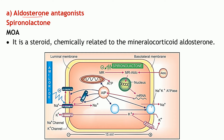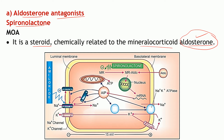The first subclass is aldosterone antagonists. The first example is spironolactone. It is actually a steroid chemically related to the mineralocorticoid aldosterone, which is secreted by the cortex of the adrenal gland. To understand the mechanism of spironolactone, let us first see the role of aldosterone, since these drugs are aldosterone antagonists — they antagonize the action of aldosterone. Aldosterone acts in the late distal convoluted tubule and collecting duct cells.